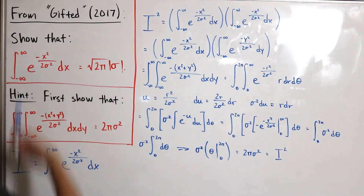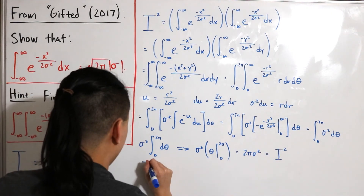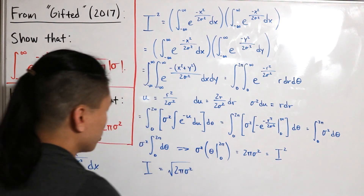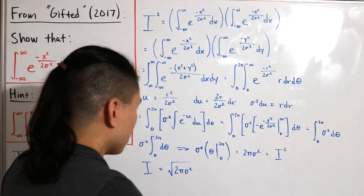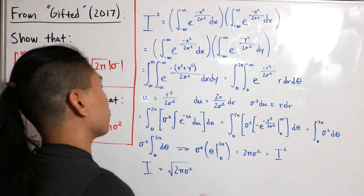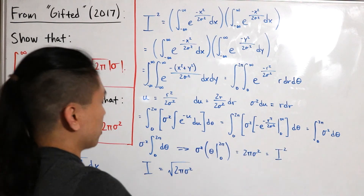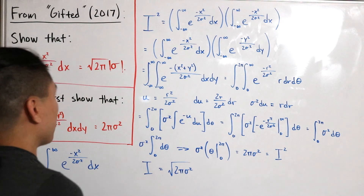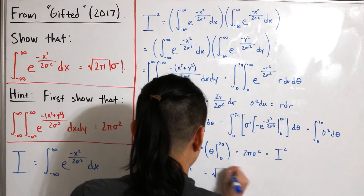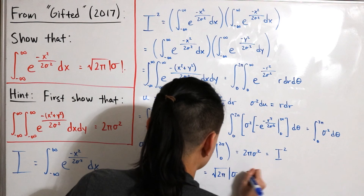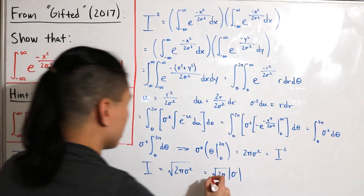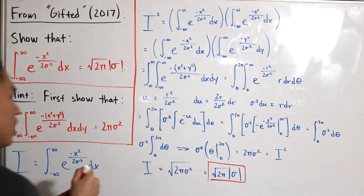Now we take the square root of both sides: I equals the square root of 2π times sigma-squared. The square root of sigma-squared is not simply sigma — we must account for the sign, since the square root of x-squared equals the absolute value of x. Therefore I equals the square root of 2π multiplied by the absolute value of sigma, which is exactly what we needed to prove.